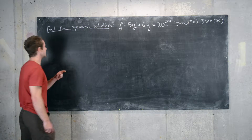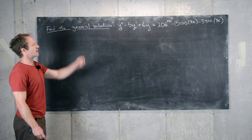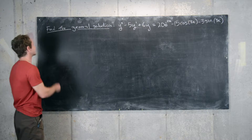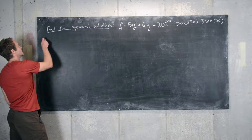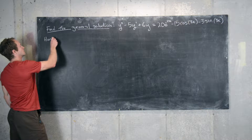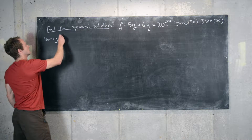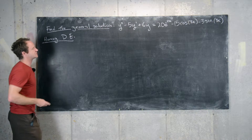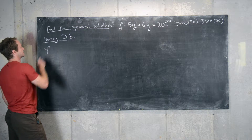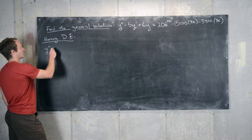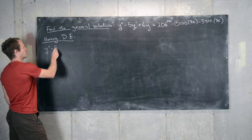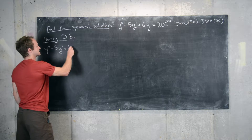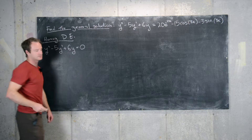The first thing we need to do is find the solution to the corresponding homogeneous differential equation. So we'll look at the corresponding homogeneous differential equation, which is given by y double prime minus 5y prime plus 6y equals 0.